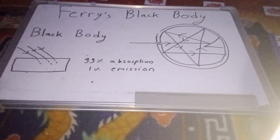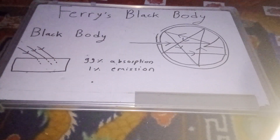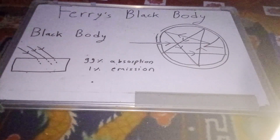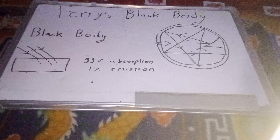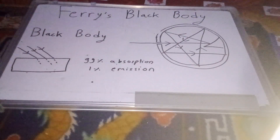What is a black body? It is the body which absorbs all radiation. It is known as a black body — the body that will absorb all radiation.